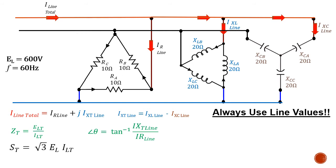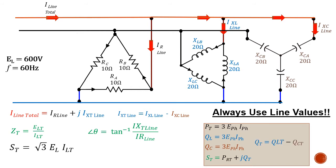Your total apparent power uses the three-phase power formula: root three times E-line times I-line, using your total line current. We can solve for each of the individual powers — resistive, inductive, and capacitive — and vector sum those together, summing the resistive power along with the difference in the reactive powers. I've shown here using three times E-phase times I-phase, but you could also use root three times E-line times I-line for each individual component. Power factor is solved the same way: total true power divided by total apparent power. Power factor equals the cosine of theta, or if you want to find theta, it's the arc cos of the power factor.